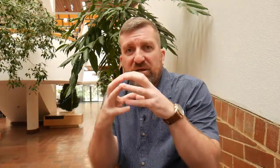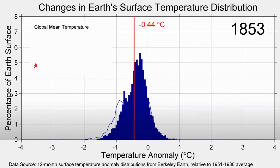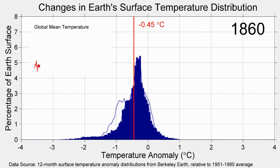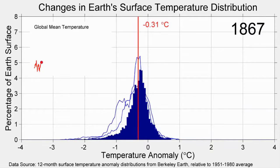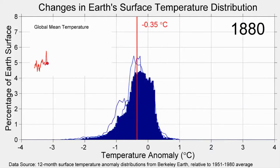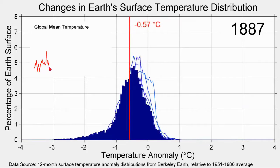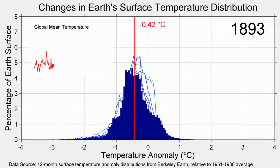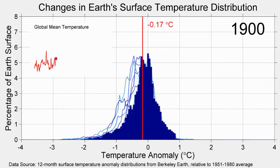We affectionately call this the 'jelly on the plate' animation, because what you're looking at is the distribution of temperature anomalies. There are a lot of temperatures clustered around the middle, which is where the average sits. On the right-hand side, you have the warm temperature anomalies, and on the left-hand side, the cold temperature anomalies.